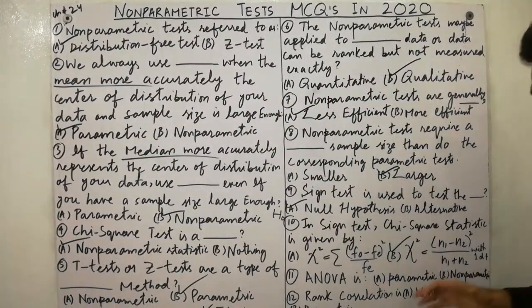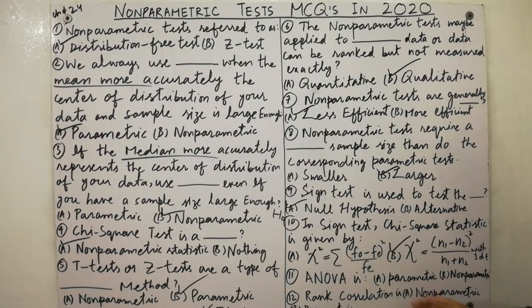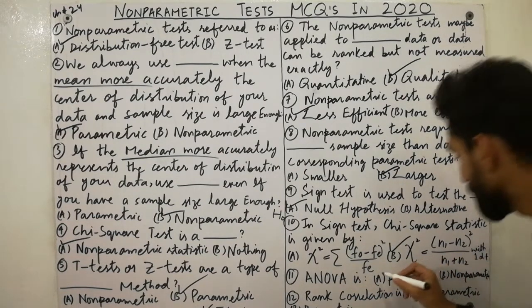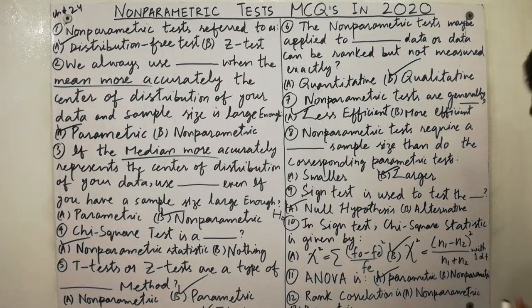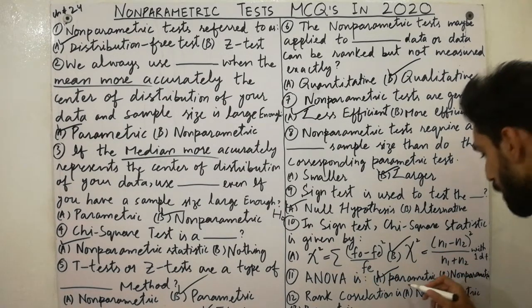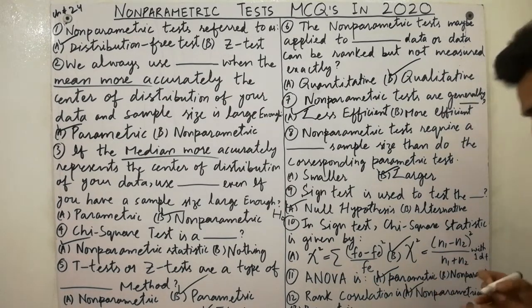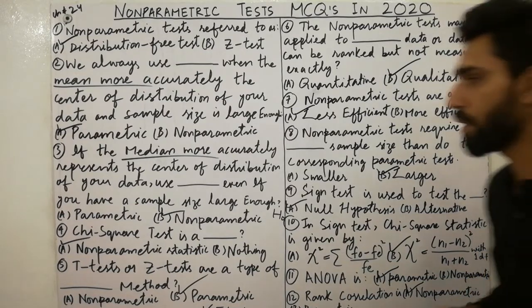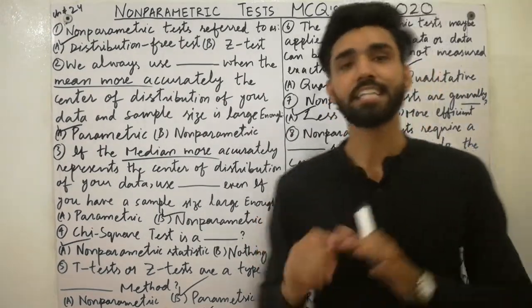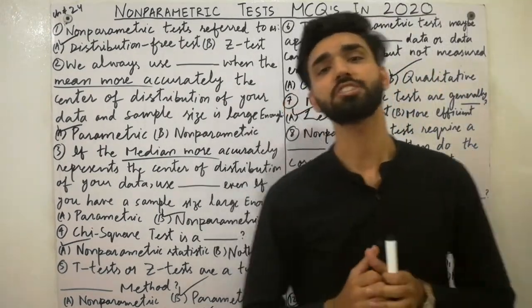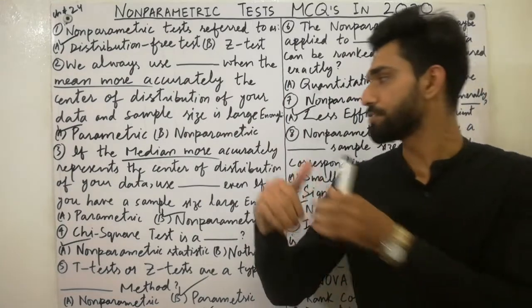Normal correlation is always parametric, but rank correlation is always non-parametric. I hope you now have clear concepts on these topics.